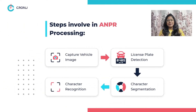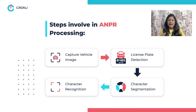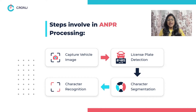Firstly, surveillance cameras capture images of both vehicles and the license plates and send them to the ANPR system. Secondly, the system analyzes images' high contrast areas to find the license plate, before converting them into grayscale images and removing noise from them.